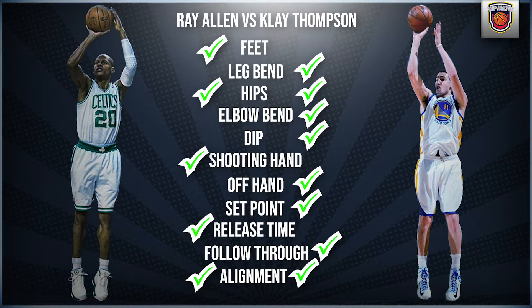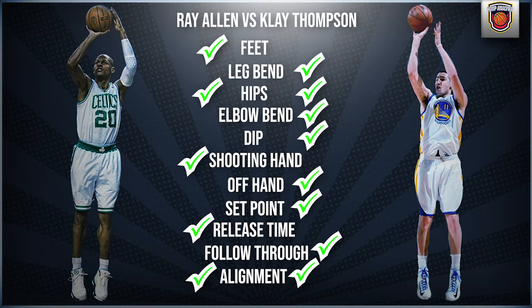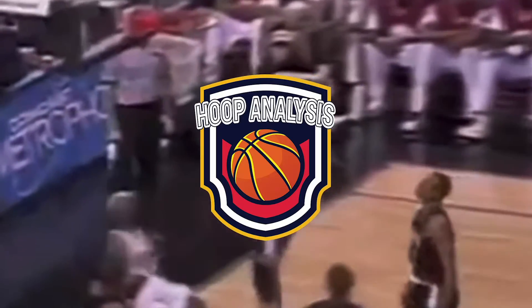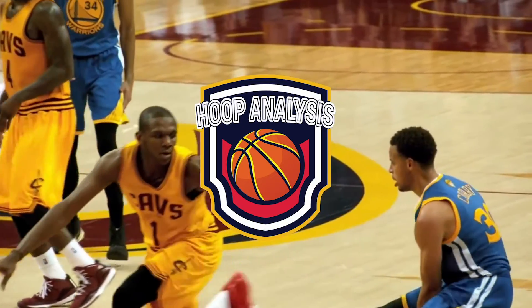Adding up the points, Klay Thompson finishes with eight points while Ray Allen finishes with five. By no means does this mean Ray Allen has a bad shot — in fact, he has one of the greatest shots ever in the game of basketball. Both are two of the greatest shooters and you can't go wrong trying either form. Shooting is not one-size-fits-all; there is no perfect form. Test out different forms and ultimately use what fits you best.